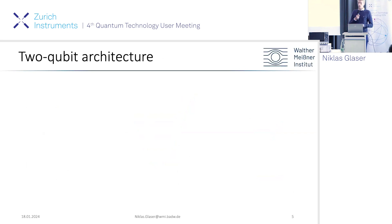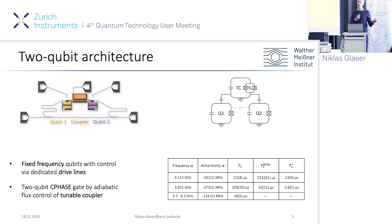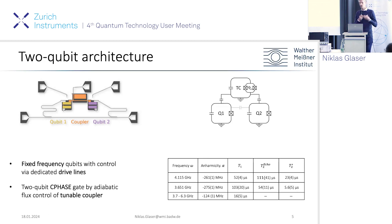We are interested in coupling multiple qubits together and performing entangling gates. For that, we look at a two-qubit architecture with fixed-frequency qubits coupled via a coupler that is tunable in frequency. The qubits have dedicated drive lines used for single-qubit control, while the coupler has only a flux control line used for implementing the entangling gate.